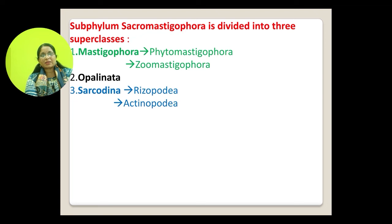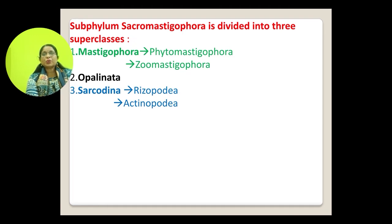Subphylum Sarcomastigophora is divided into three superclasses: first Mastigophora, second Opalinata, and third Sarcodina. Mastigophora is divided into two classes — Phytomastigophora and Zoomastigophora. Sarcodina has two classes: Rhizopoda and Actinopoda.